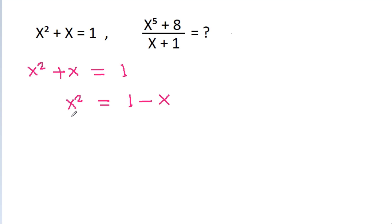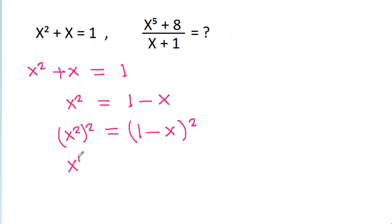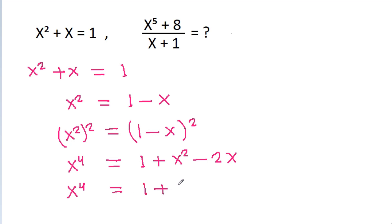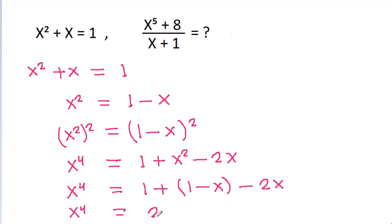If we square both sides, then x squared squared will be equal to (1 minus x) squared. So x power 4 is equal to 1 plus x squared minus 2x. Substituting x squared equals 1 minus x, we get x power 4 is equal to 1 plus 1 minus x minus 2x, which gives x power 4 equal to 2 minus 3x.